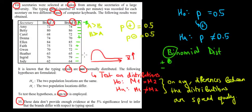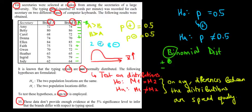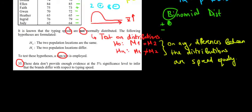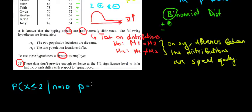So out of all 10 sets of typing speeds between brand A and brand B, we have two positive differences and eight negative differences. When checking the binomial test, we want to know how likely it is that at most two positive differences happen by chance, since it's quite unlikely to have so few positive differences when we'd expect 50-50. We're checking the probability of having at most two positive differences, given a sample size of 10 and a proportion of 0.5 under the null hypothesis — we'd expect a 50-50 distribution of positive and negative differences.